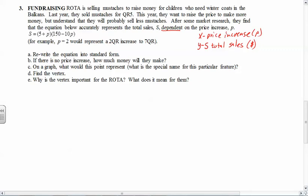The first thing it asks us to do is rewrite the equation into standard form. So what we need to do is go S equals 5 plus P times 150 minus 10P. Now you know how to do this because we learned this a few weeks back, we need to FOIL. So we're going to go 5 times 150 would be 750, 5 times negative 10 would be negative 50P.